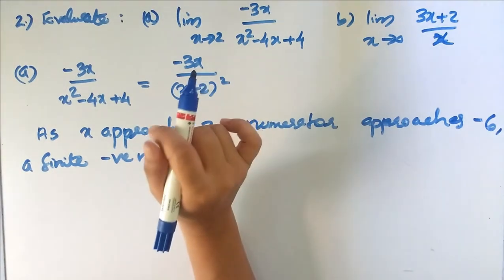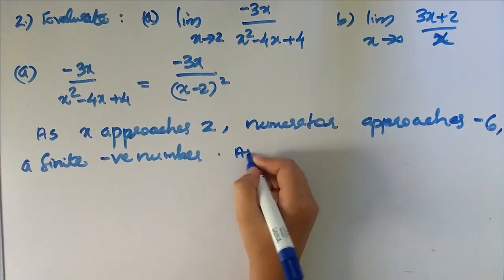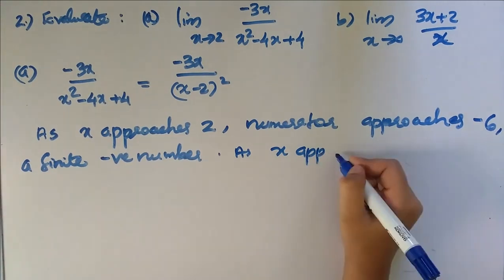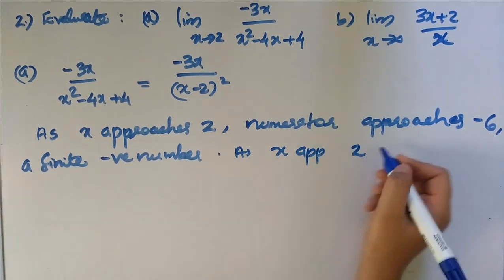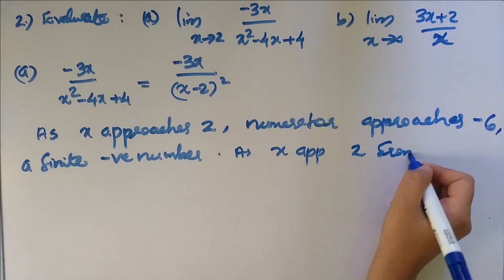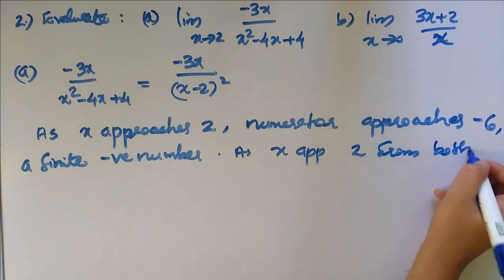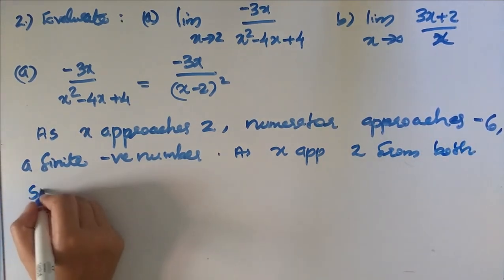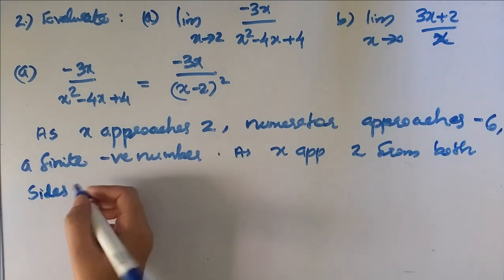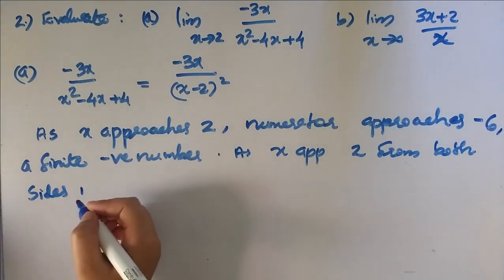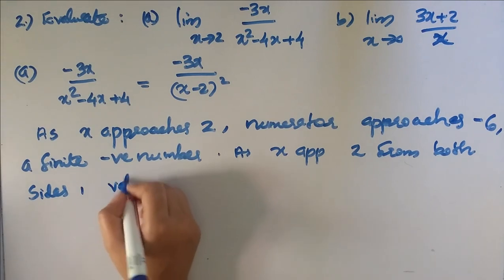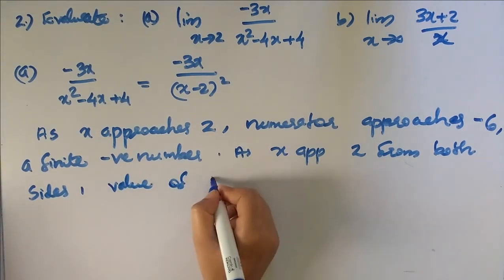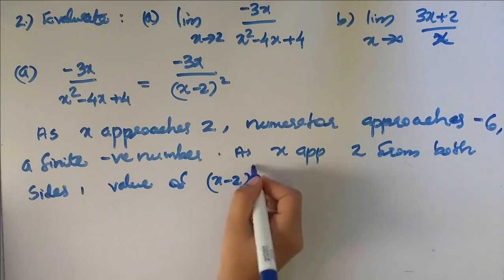As x approaches 2 from both sides, the value of the denominator (x minus 2) all squared approaches 0.